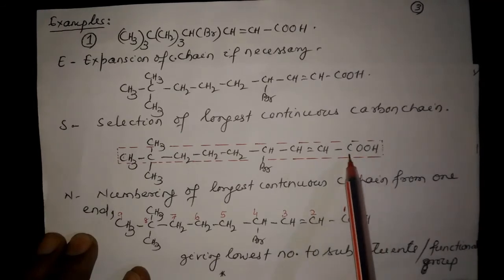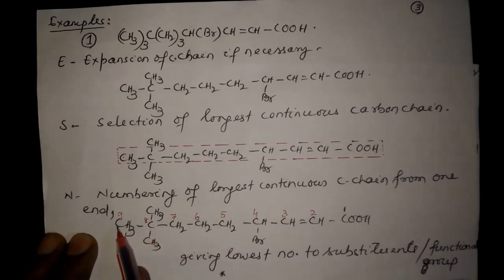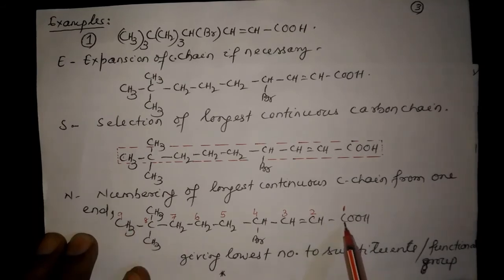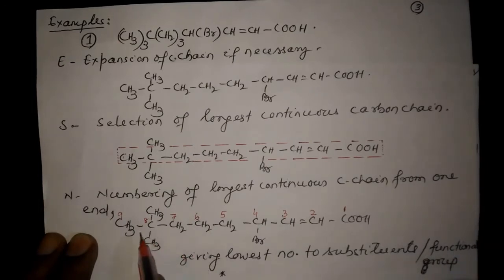We have to give numbers to this carbon chain from one end. This end should be treated as number one carbon because COOH is the main functional group. The numbering goes 1 through 9, and this is the longest continuous carbon chain, numbered from this side — not from the other side — because this carbon is the main carbon atom attached to the main functional group. By numbering, you should give the lowest number to the substituents or functional group.